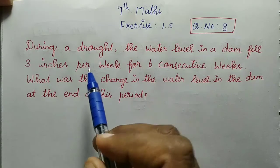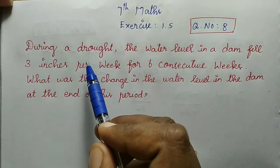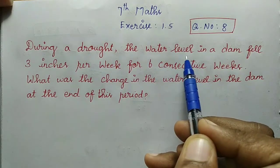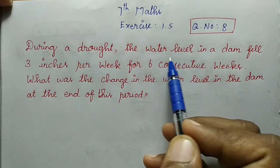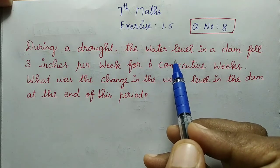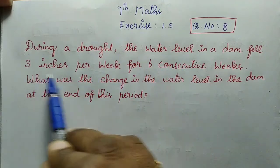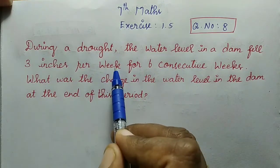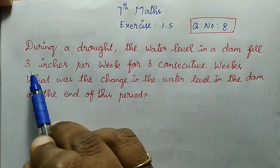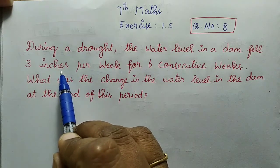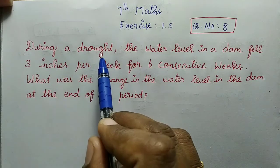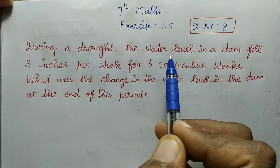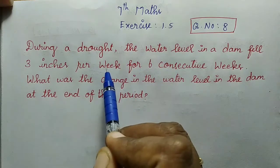So, in the dam the water level is reduced. If we reduce per week — 1 week, 3 inches per week. So, in the dam the water level is reduced.